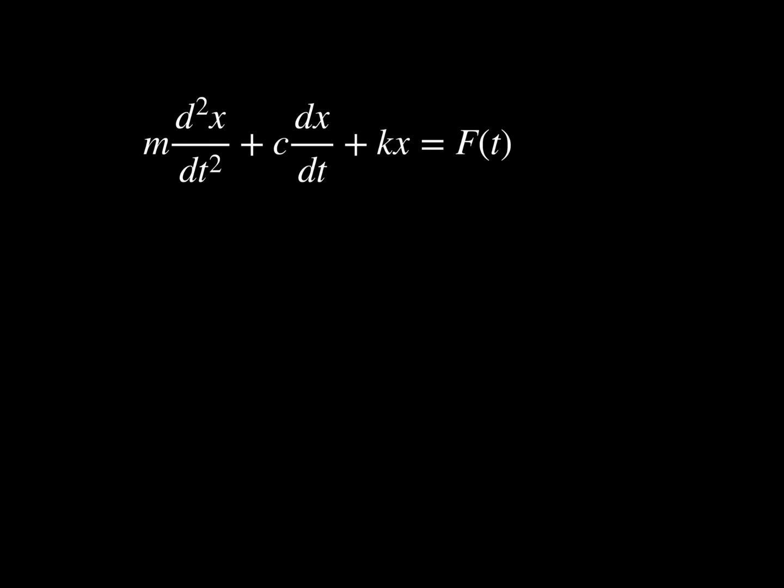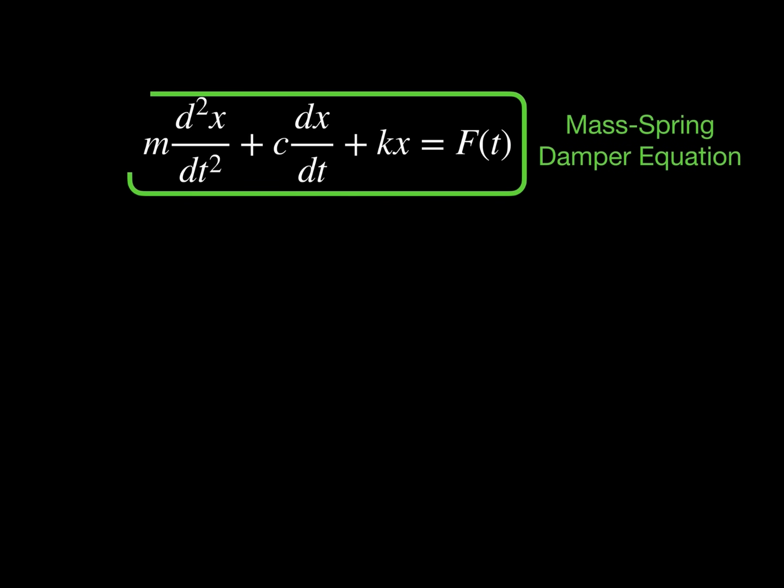This differential equation describes the motion of a mass spring damper system such as a car suspension. We can apply the Laplace transform and assume no initial conditions. It can now be rearranged into the ratio of output to input, called a transfer function.